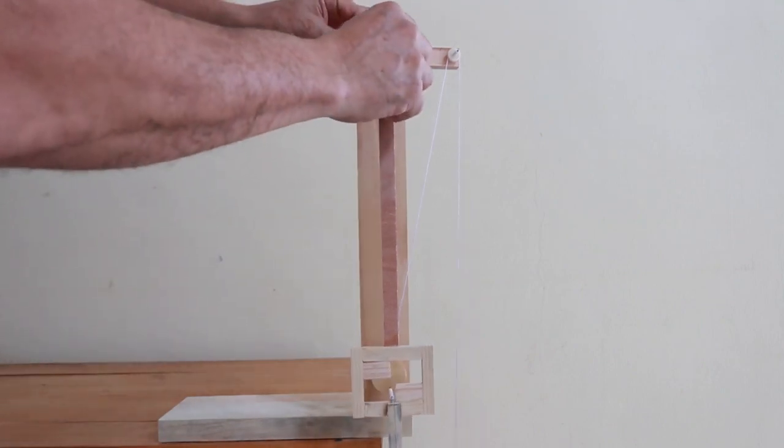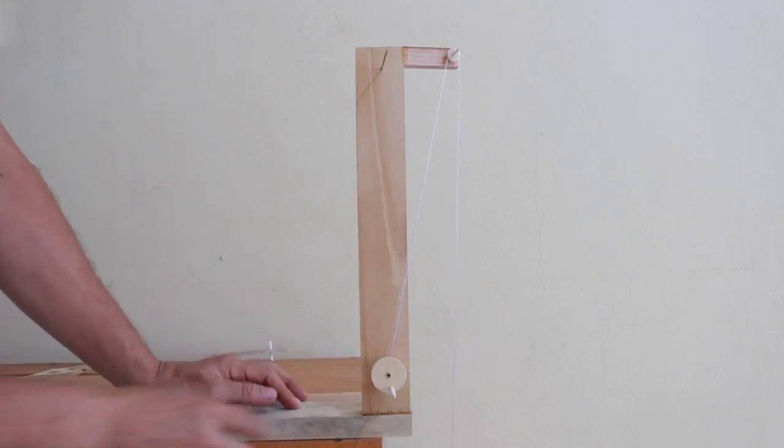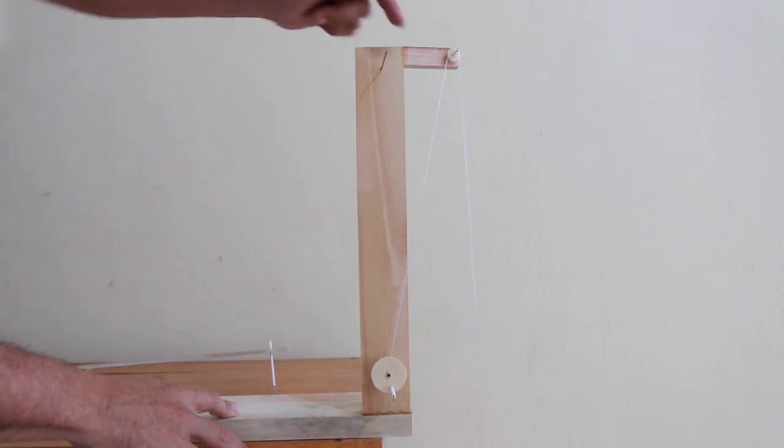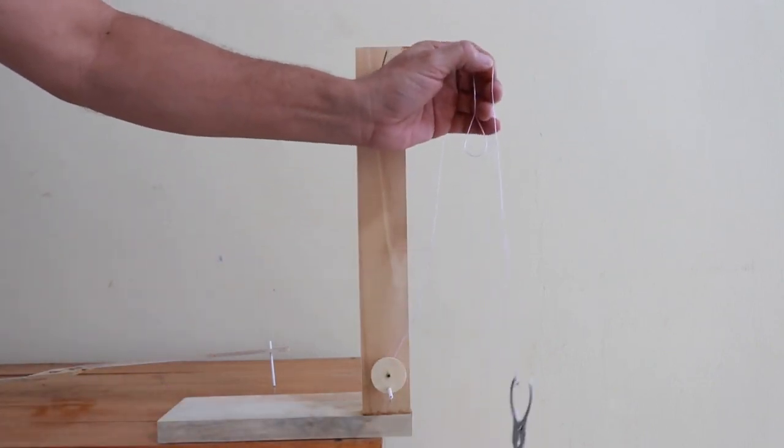Let me take off the pendulum. Here we have this wheel which has a thread attached to the axis. The thread comes here and then there is a weight at the other end.